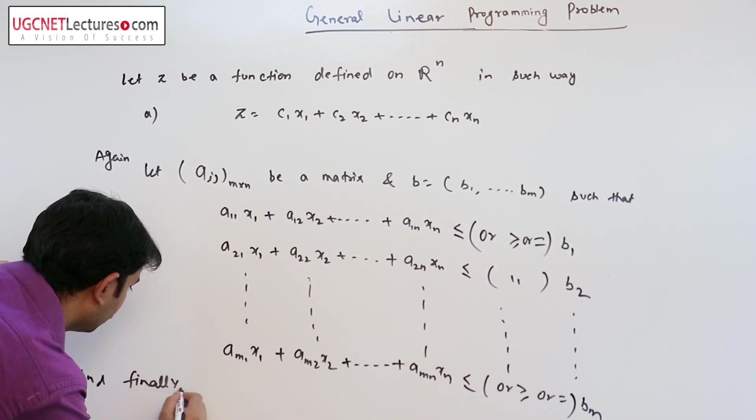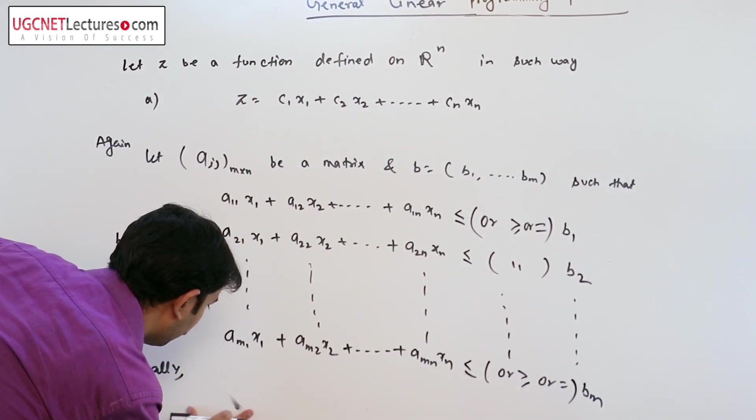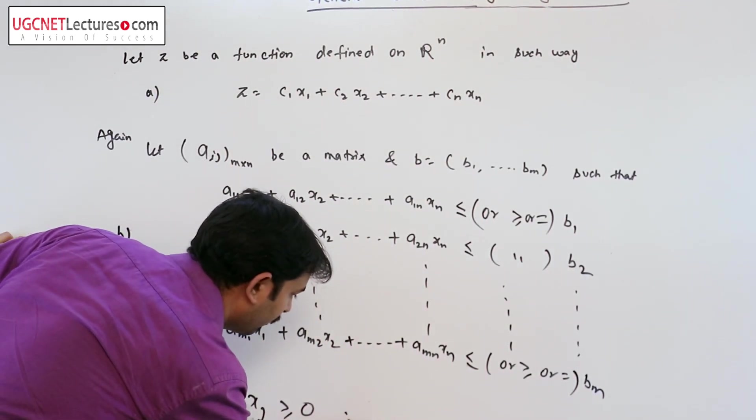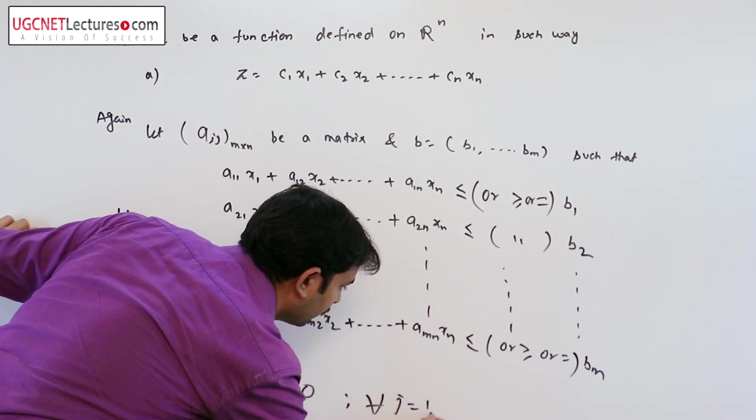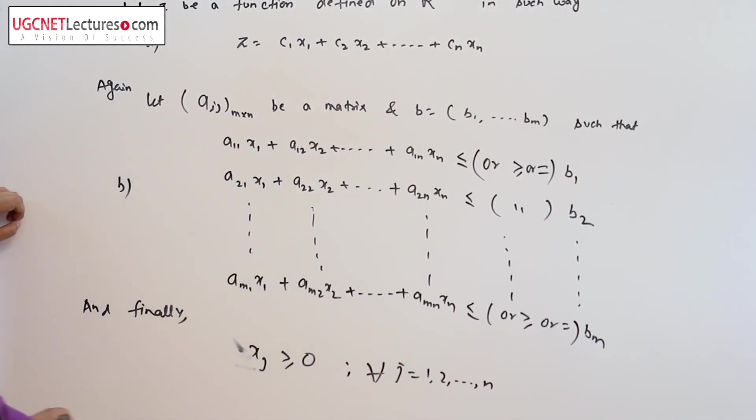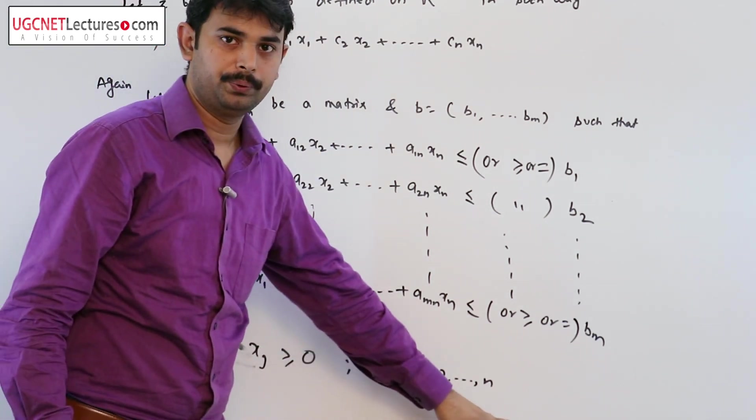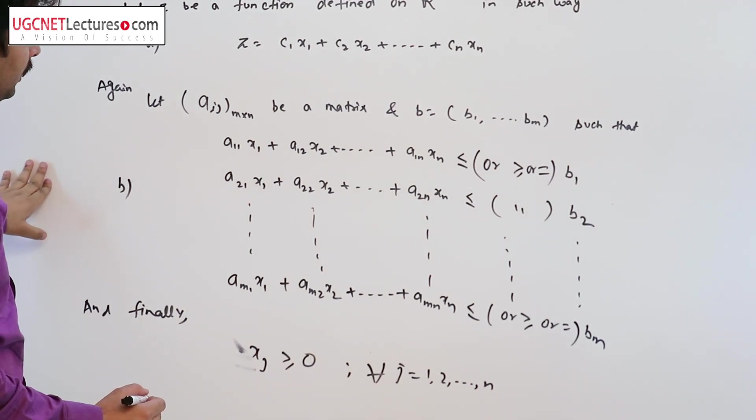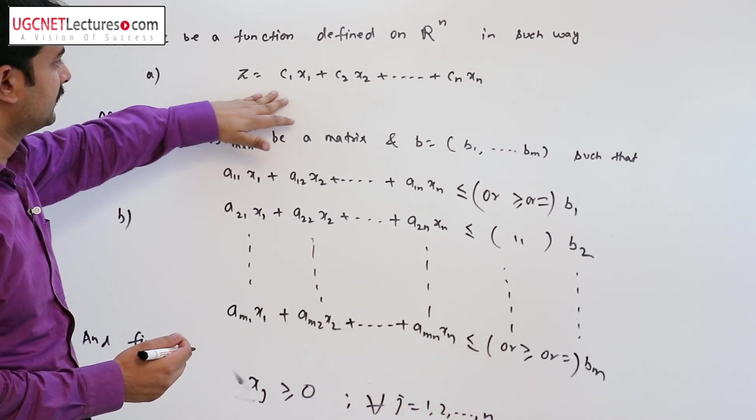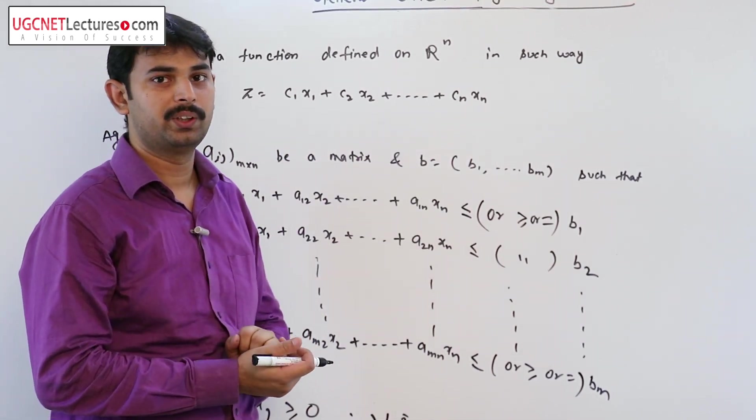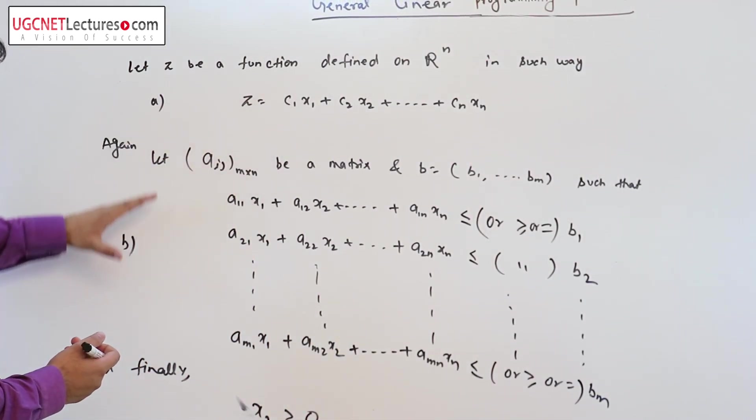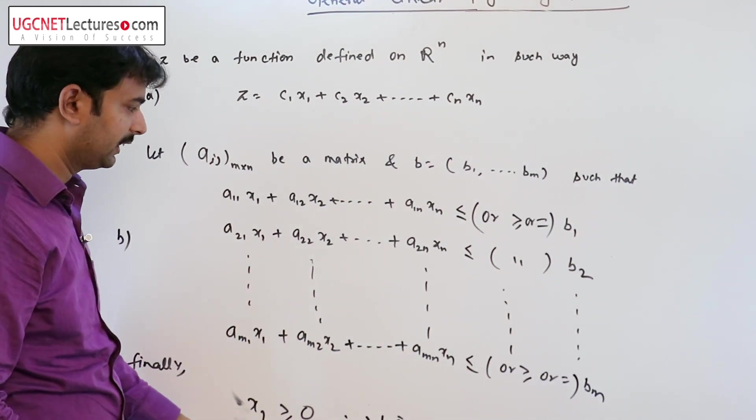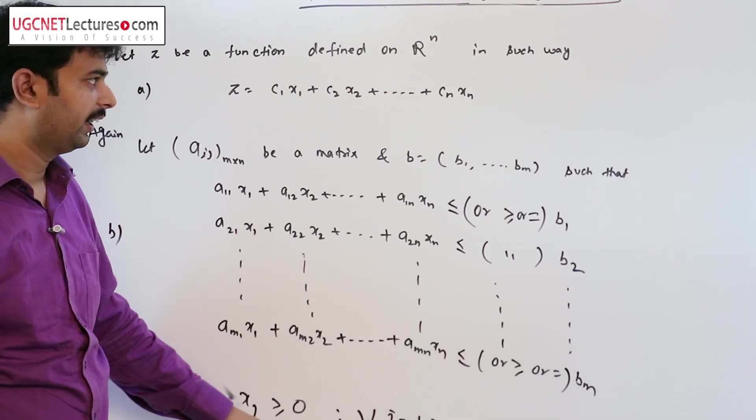all xⱼ's are non-negative for all j which is equal to 1 to n. Here z is linear in x₁ to xₙ subject to the following constants, and finally all the x's are non-negative.